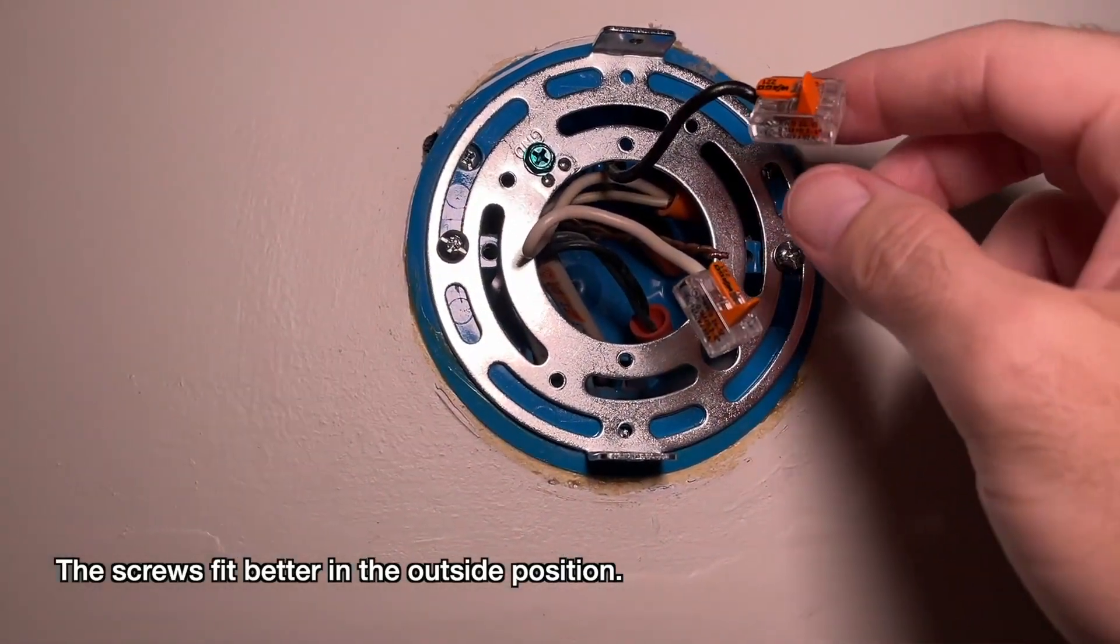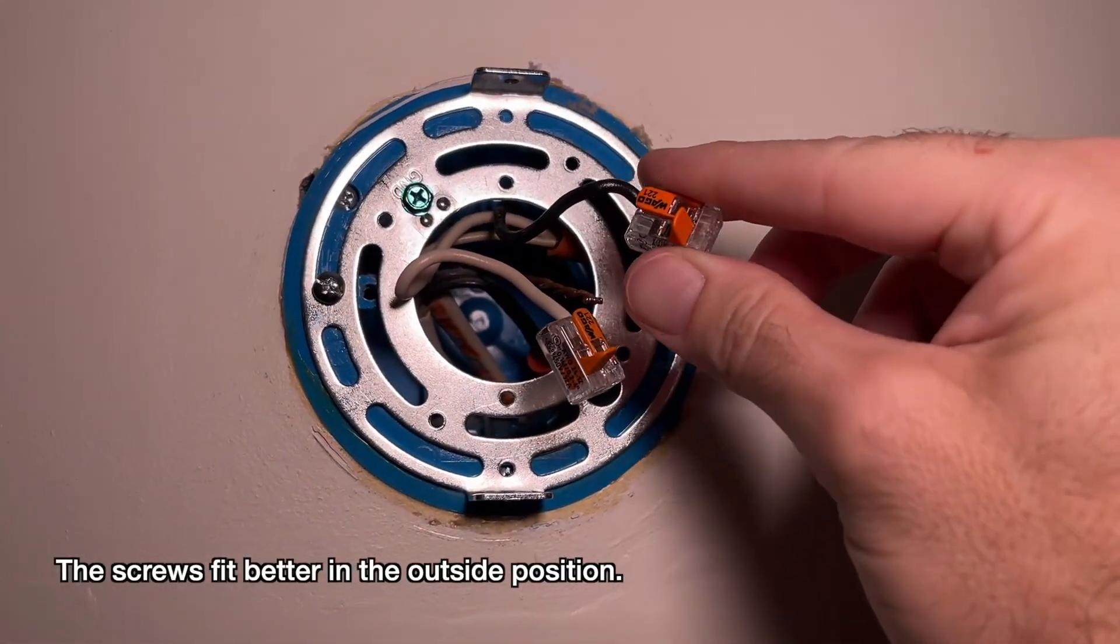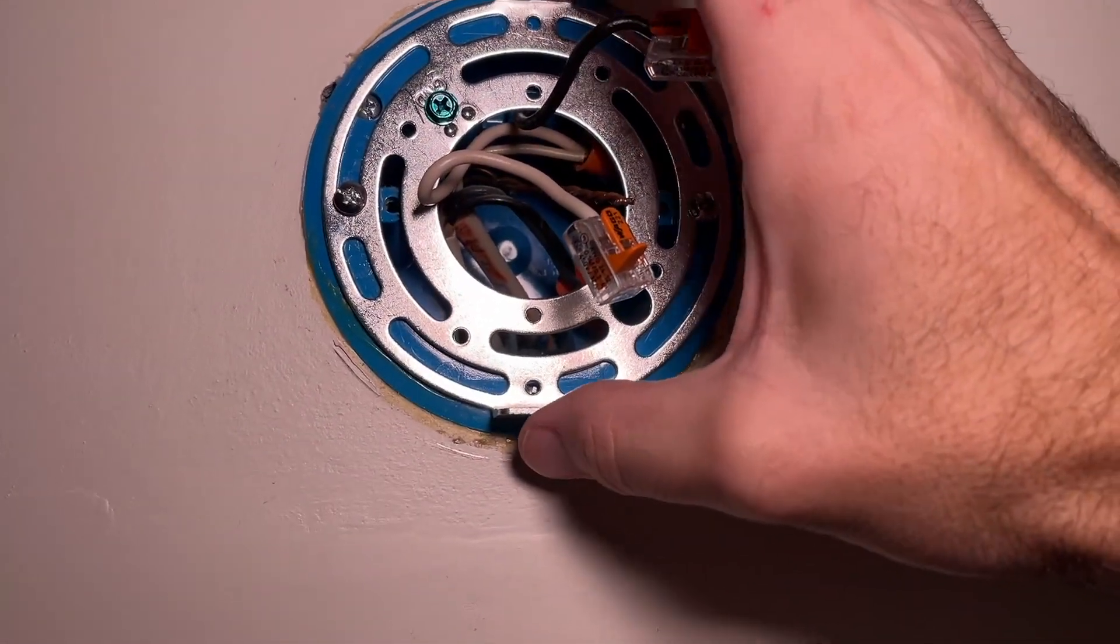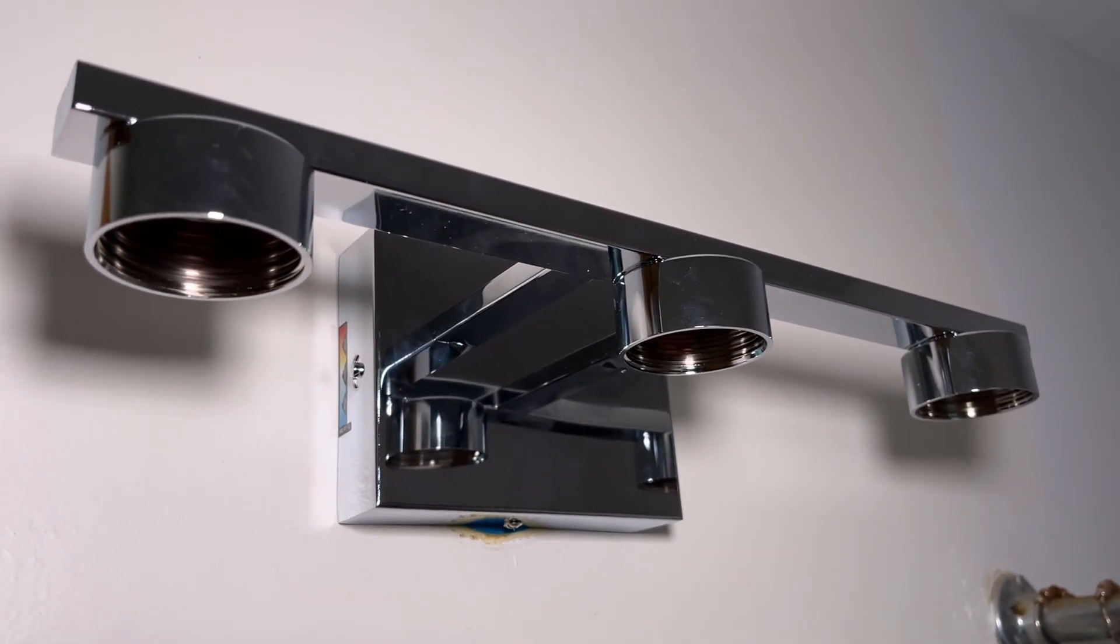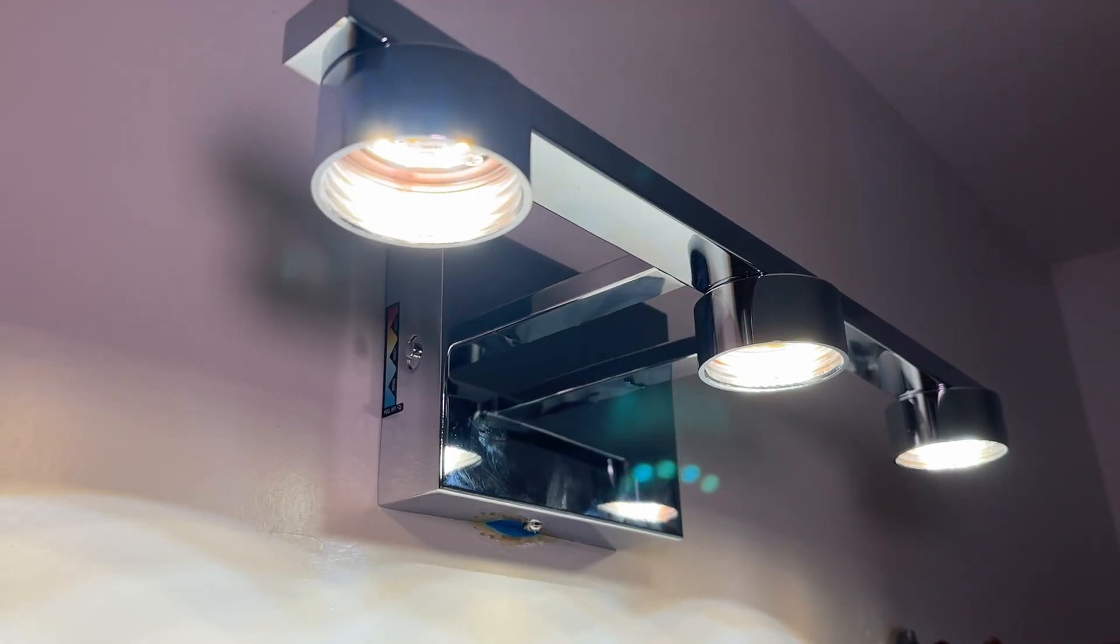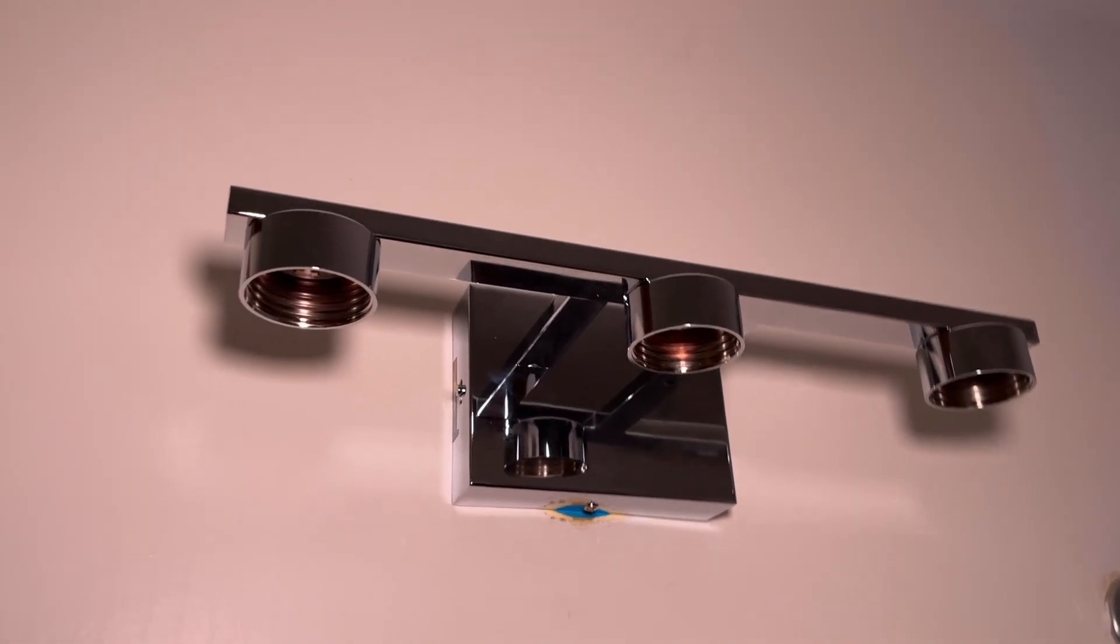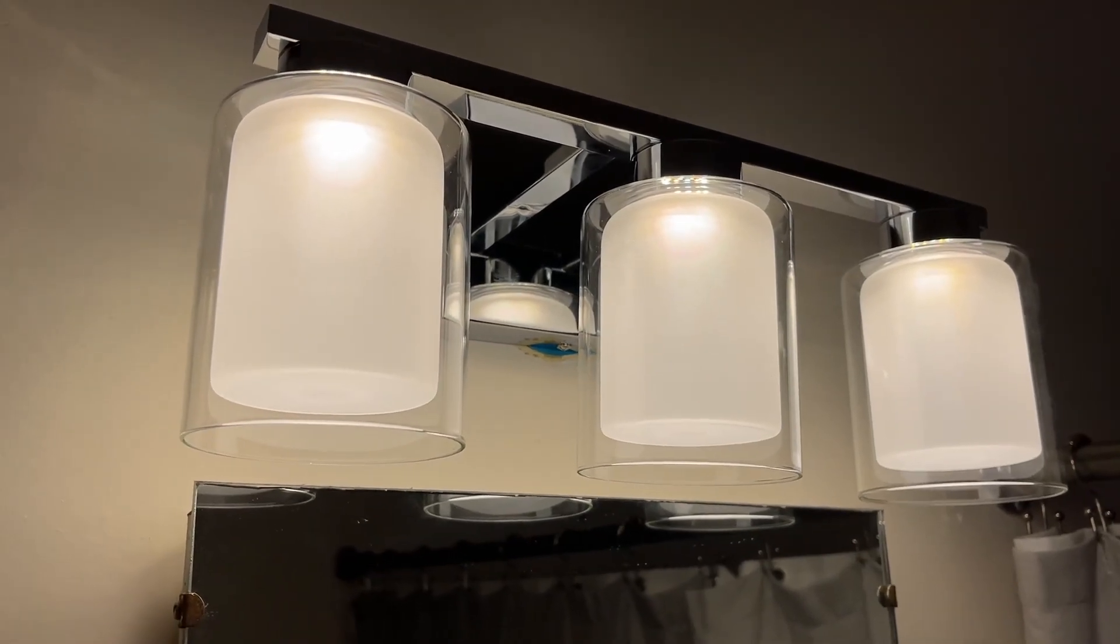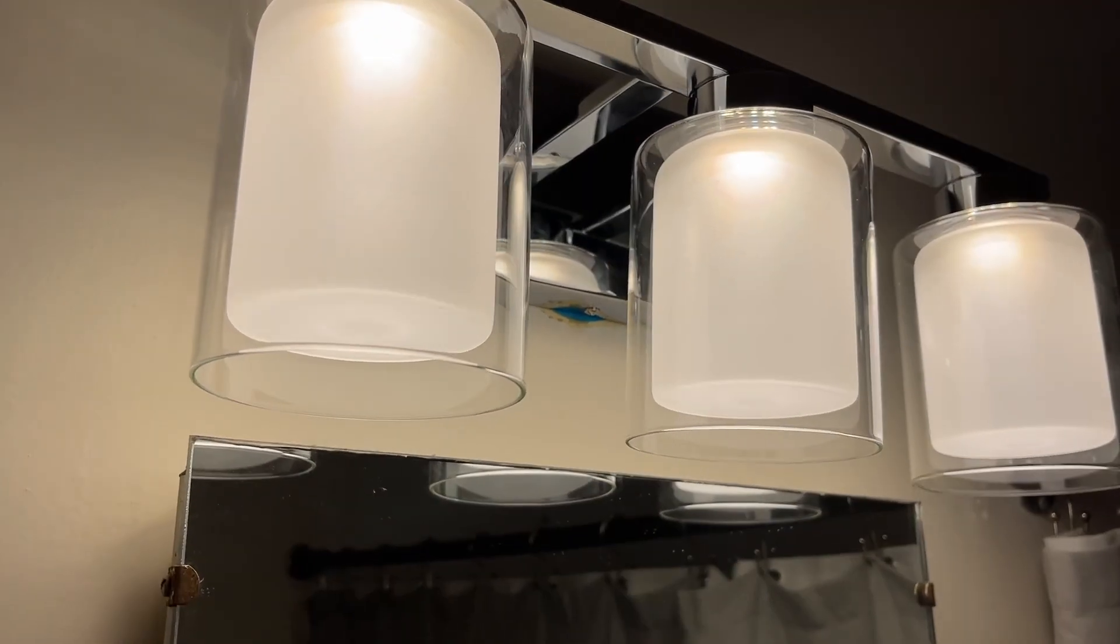I have the plate installed. It came with some wire nuts but since I have the Wago connectors I'm just going to use those. I'll put the light up here, connect up the wiring, and put these two screws in. Now I have it installed. Before I put the lenses on I want to test the light. That's working, so now I can put the lenses on. Here I have one lens on. Now I have the fixture installed with all three lenses.